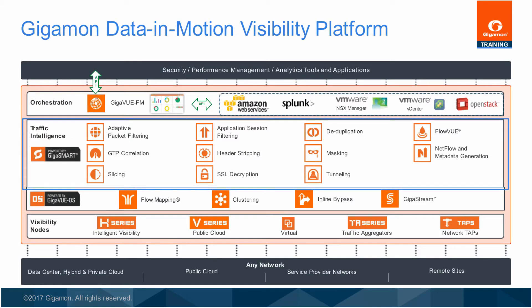The GigaSmart Intelligent Packet Modification platform has a growing number of applications. There is a set of training modules that describes each of these GigaSmart applications in more depth. These applications include SSL Decryption, Masking, Packet Slicing, Source Port Labeling, GTP Correlations, IP Tunneling, Header Stripping, Adaptive Packet Filtering, Application Session Filtering, Data Deduplication, NetFlow Generation, and Flow View. For an up-to-date list of software applications and their licenses, refer to the GigaSmart Data Sheet and User Documentation.